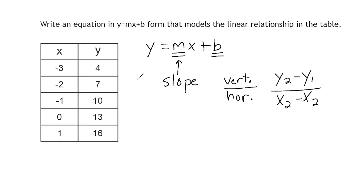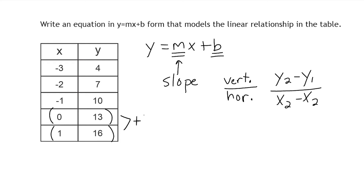When your numbers are in a table form, there's a really easy way to find slope. We're going to select two different points from our table. Let's pick the point (0, 13) and the point (1, 16). We're going to start by finding the difference between the y values. Starting at 13 and going to 16 is an increase of 3. And starting at 0 and going to 1 is an increase of 1.